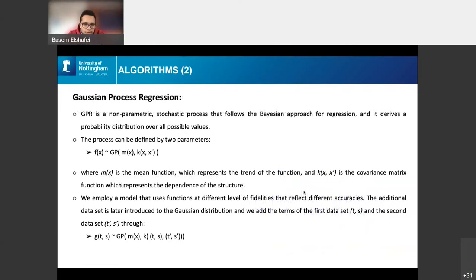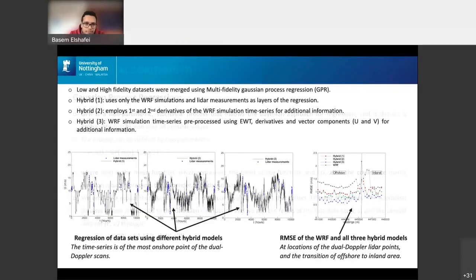The algorithm for the Gaussian Process. The Gaussian Process is a non-parametric stochastic process. It uses the Bayesian approach. We have two defined parameters for the algorithm: the mean function and the covariance matrix. The mean function presents the trend of the function while the covariance matrix represents the dependence of the structure. And since we're using two different fidelities or different levels of fidelities, we add the second time series as T prime S prime. So the function becomes the Gaussian Process mean function and then the covariance matrix, but with two different time series T and S for the low fidelity and T prime S prime for the high fidelity.